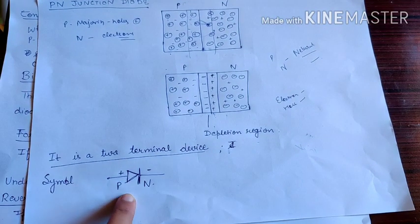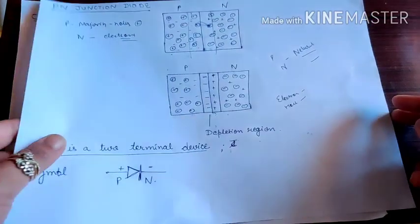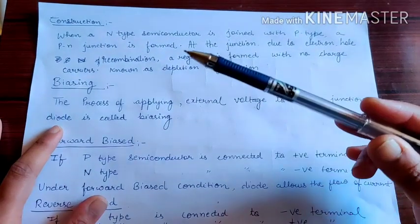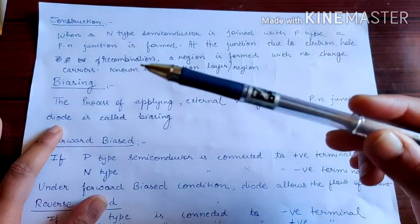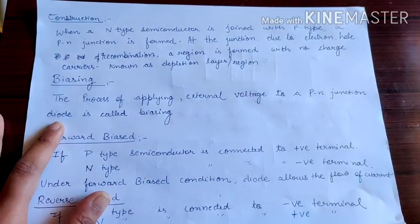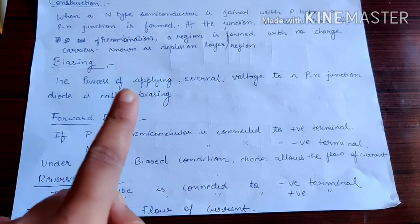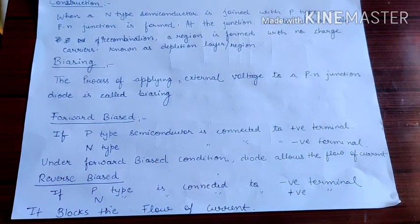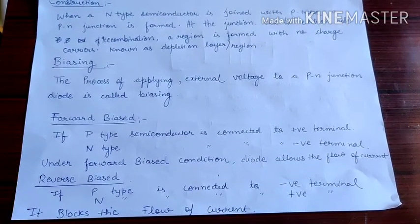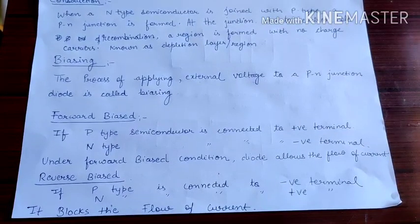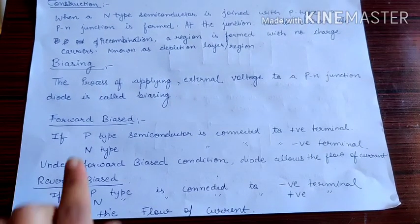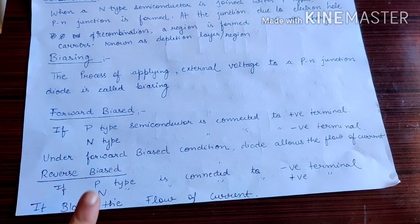You can see the symbol of the diode — this is P and this is N. At the junction, due to electron-hole recombination, a region is formed with no charge carriers, which is called the depletion region. The process of applying external voltage to a PN junction diode is called biasing. In this unbiased state, the diode will not conduct. There are two types of biasing: forward biasing and reverse biasing.